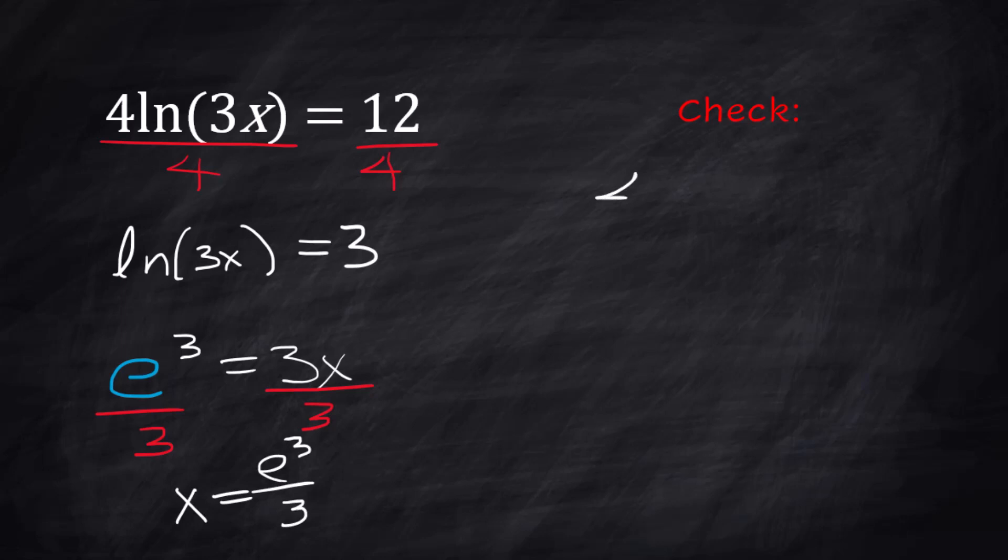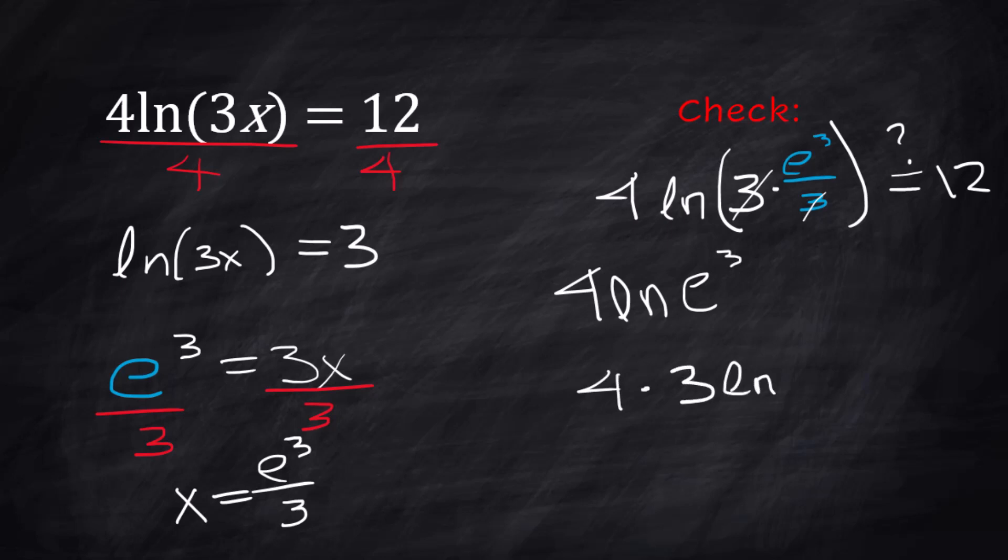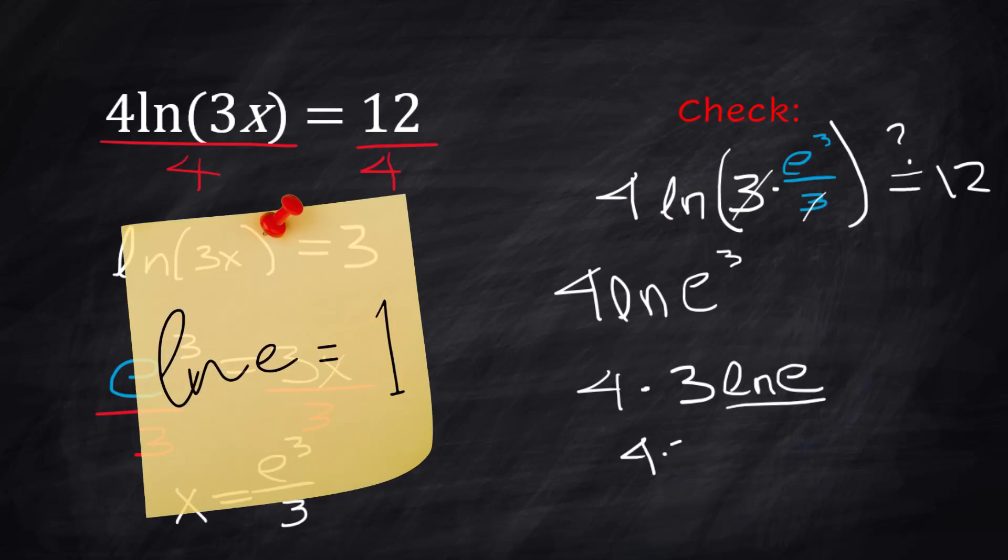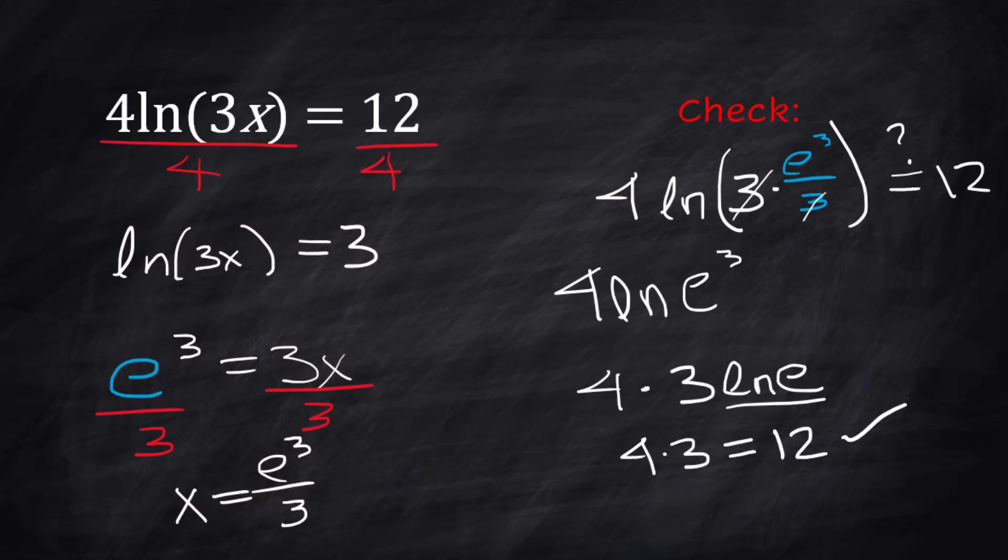And let's go in and do the check. We have 4 times the natural log of 3 times what we got for our answer, which is this e cubed over 3. And we're checking to see if that's going to equal 12 when we're finished. So now we have the natural log of the 3 times e cubed over 3. The 3's cancel. So the e cubed just comes down. Now natural log with an exponent, the exponent comes down. So we now have the 4 out here. And we're going to be multiplying that times 3 natural log of e. Well, the natural log of e is 1. So we're just left with 4 times 3. And that does equal 12. So that is a check.